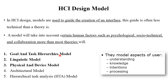The 5 types of models are: Goals and Task Hierarchical Model, Linguistic Model, Physical and Device Model, Architectural Model, and Hierarchical Task Analysis Model. In this video, we will learn about the first 3 models — Goal and Task Hierarchy, Linguistic, and Physical and Device Model. The remaining 2 models will be covered in the next videos. These models address aspects of the user, including understanding, knowledge, intention, and processing of different systems.